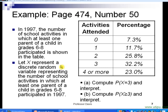And it says, let X represent a discrete random variable representing the number of school activities in which at least one parent of a child in grades 6 through 8 participated in 1997. So in part A, it says, compute P of 3 and interpret, and then compute the probability that X is greater than or equal to 3 and interpret.